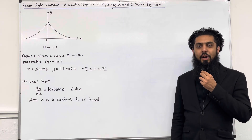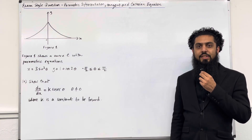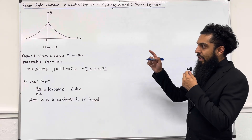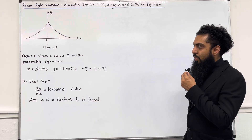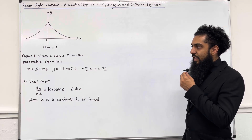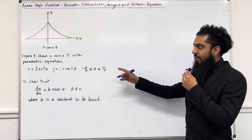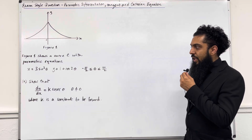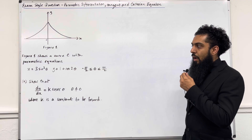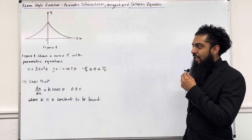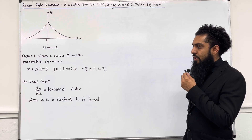Here is an exam-style question on parametric differentiation, tangent and Cartesian equation. Figure 1 shows a curve C with parametric equations x equal 3 sine cubed theta, y equal 1 plus cos 2 theta, where theta is more than or equal to minus pi over 2 but less than or equal to pi over 2. Part A: show that dy over dx is equal to k cosec theta, where theta is not equal to 0 and k is a constant to be found.